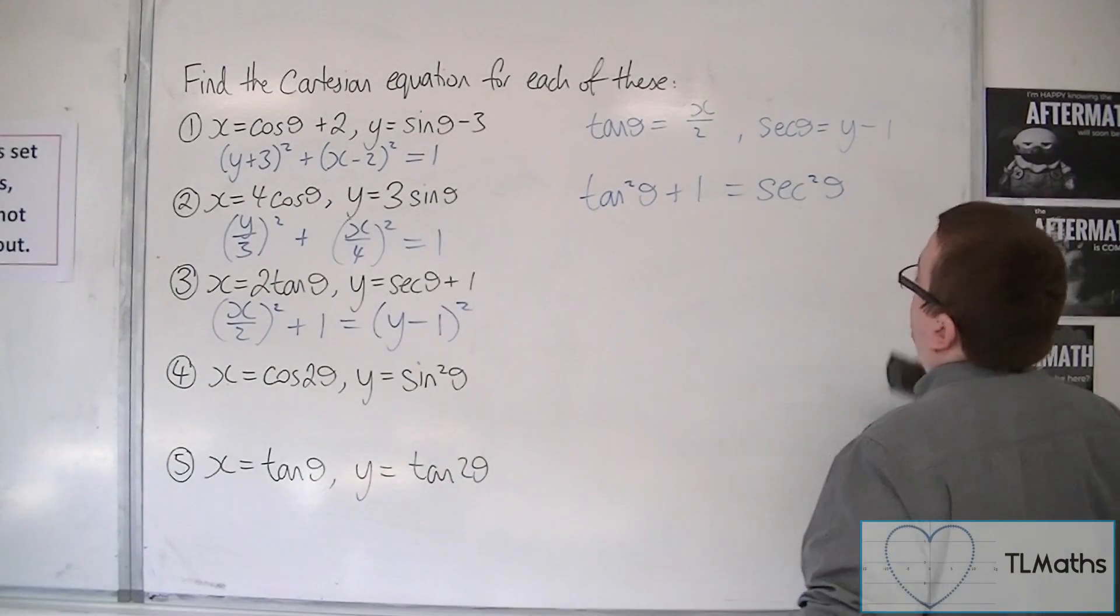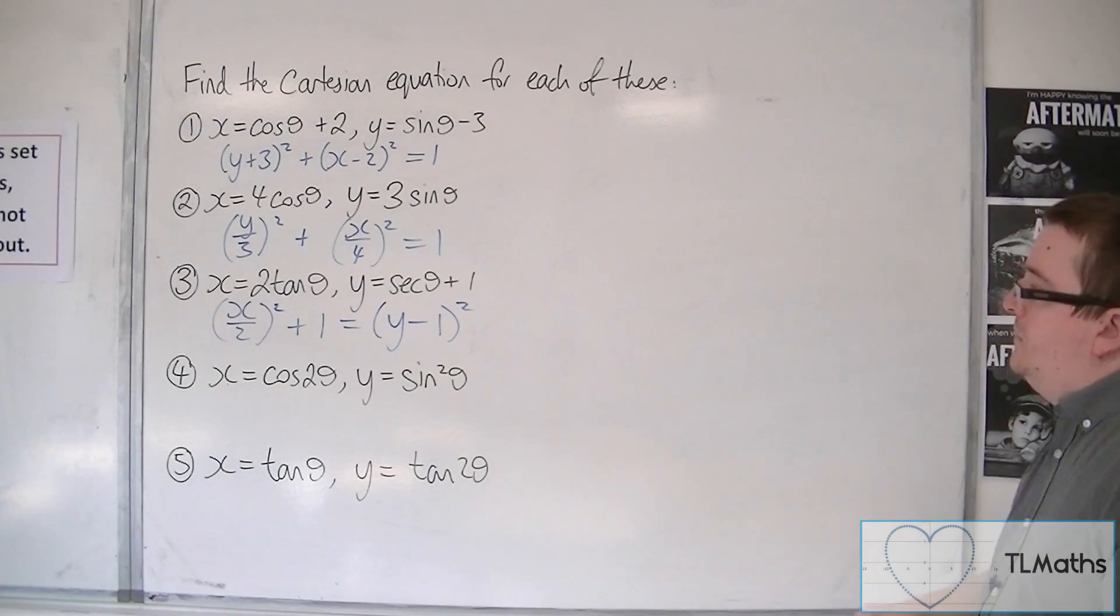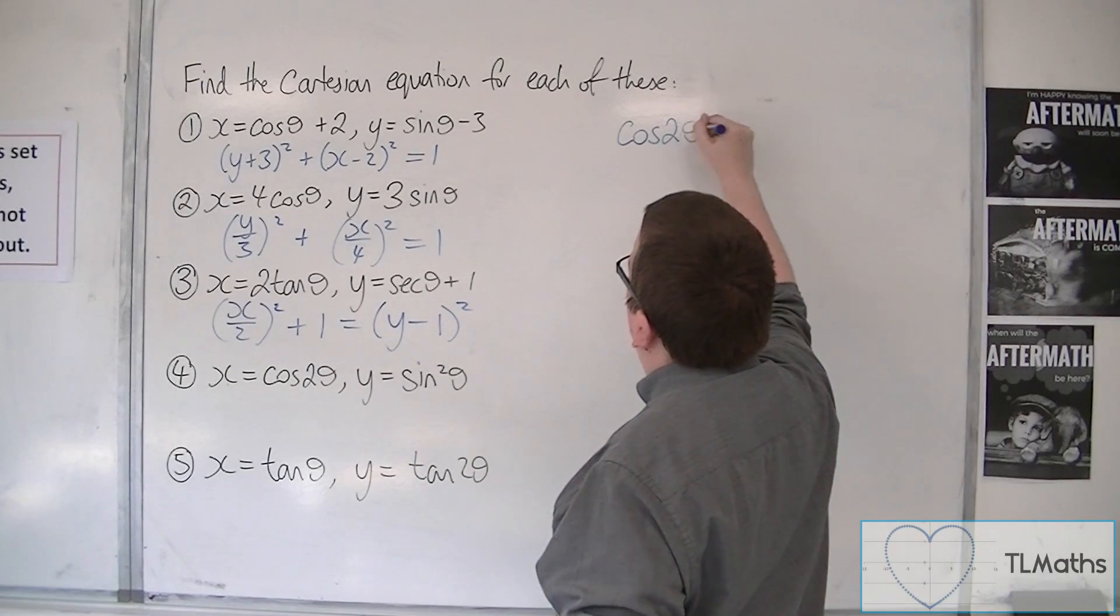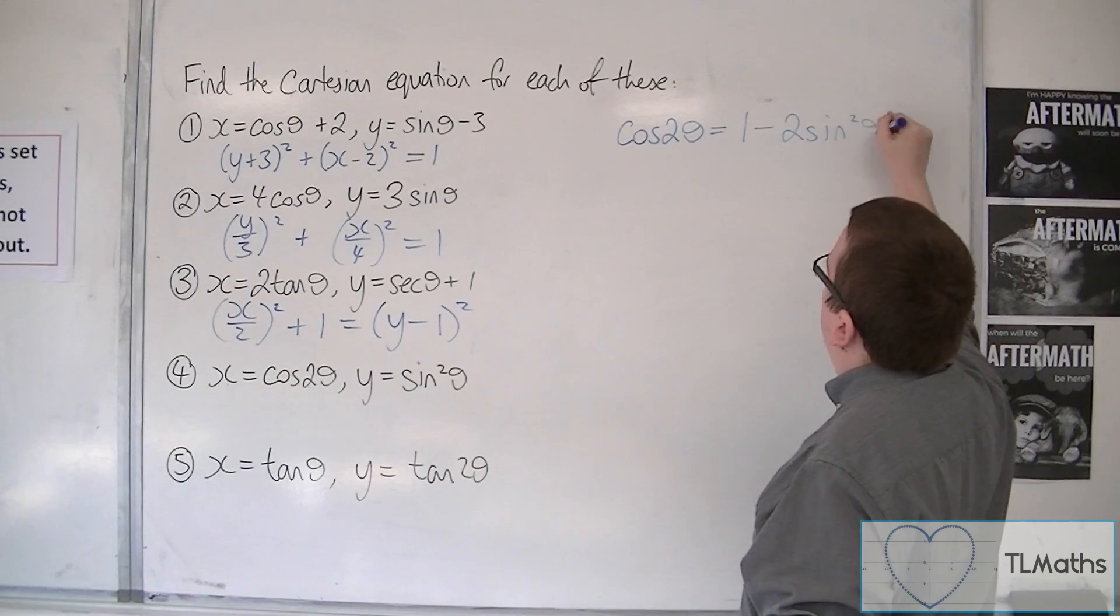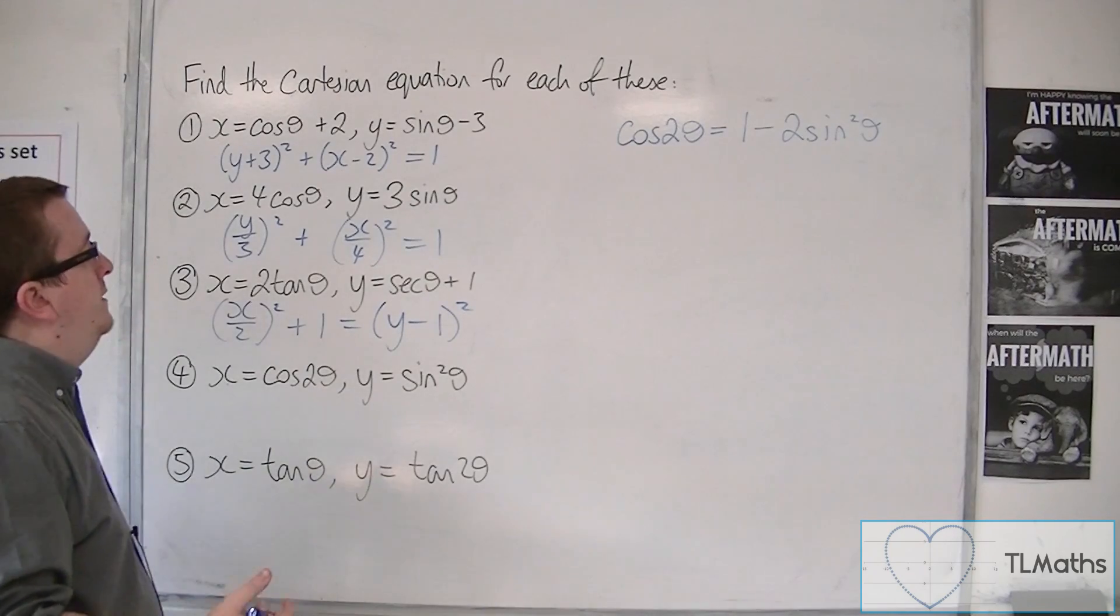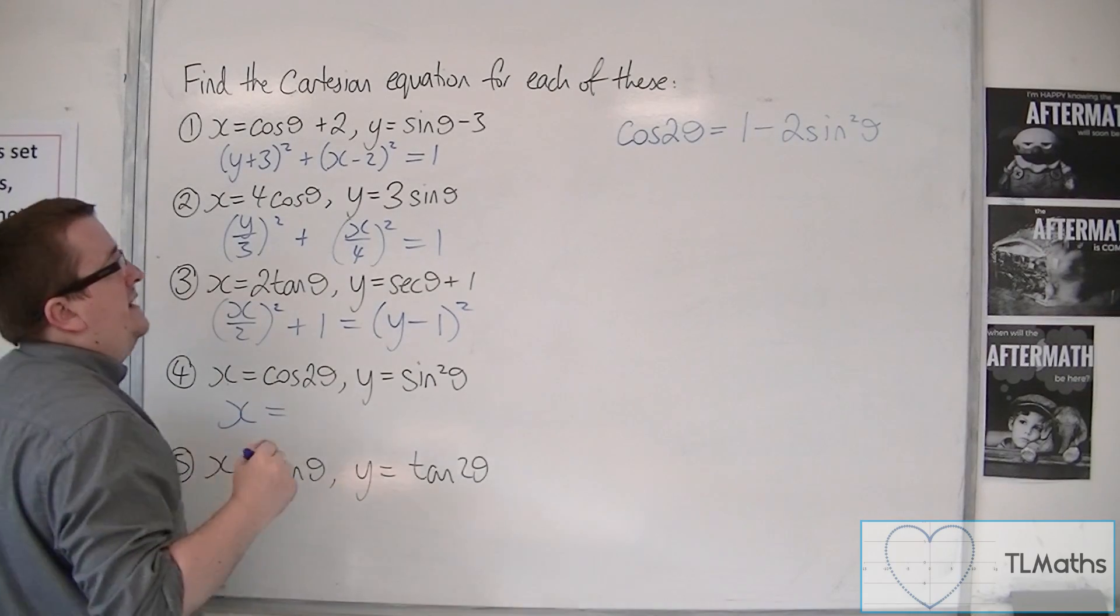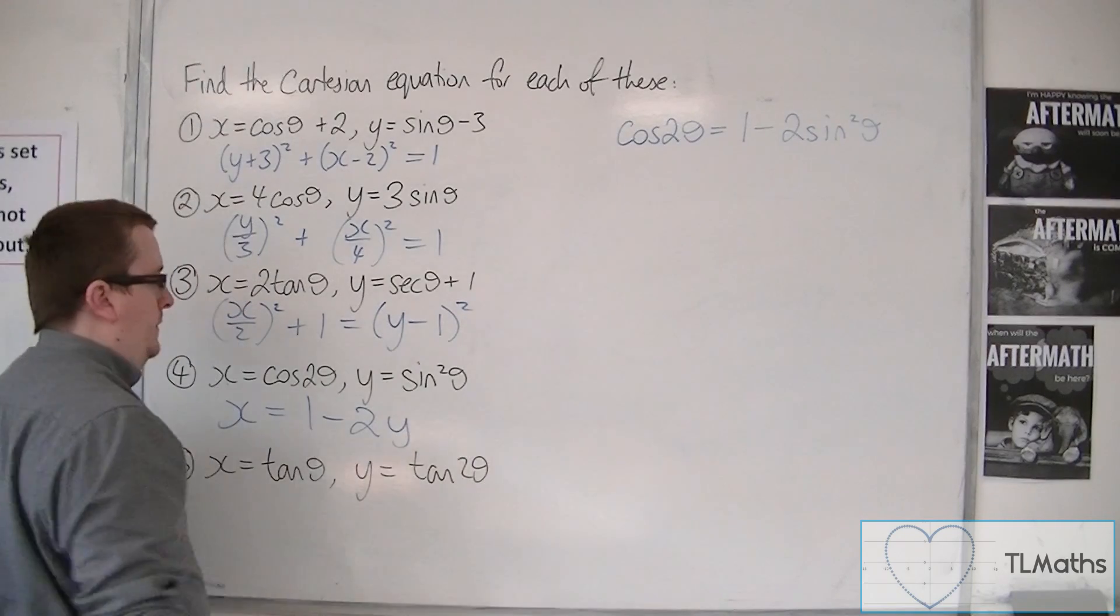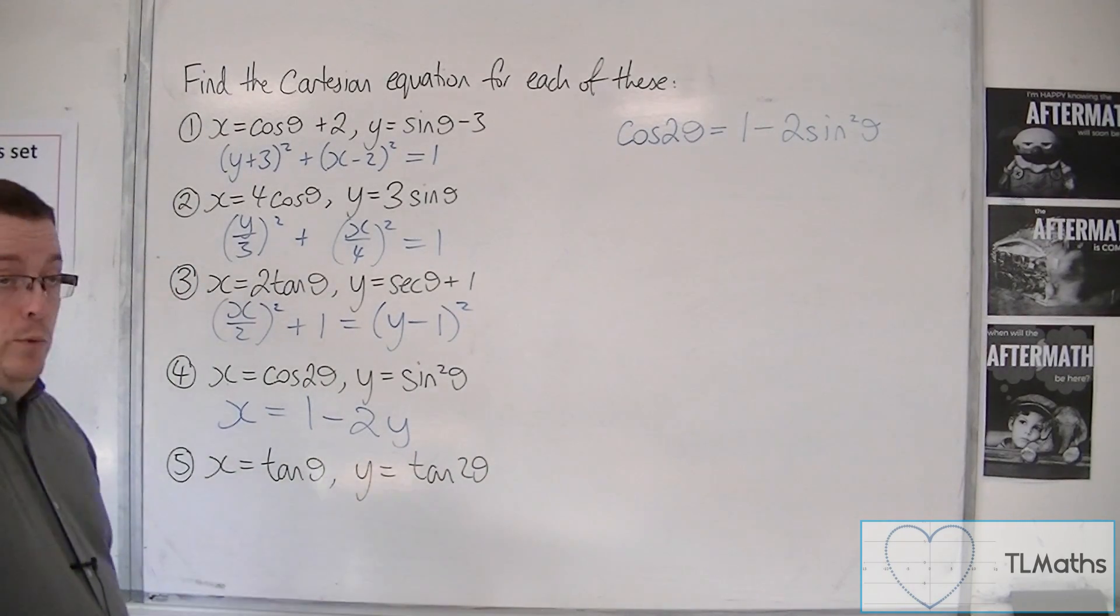Now with the fourth one, x equals cos 2 theta and y equals sin squared, you've got to remember that cos 2 theta is equal to 1 minus 2 sin squared theta. That's one of the identities that you need to remember for cos 2 theta. So that means that x is equal to 1 minus 2 lots of y. And that's your Cartesian equation. So that was pretty straightforward.